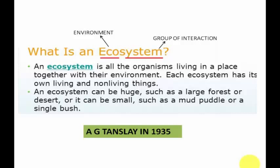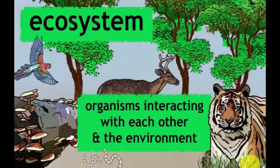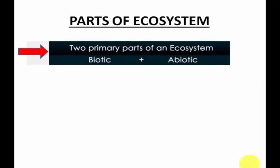Each ecosystem has its own living and non-living things. An ecosystem can be huge, such as a large forest, an ocean, or a desert, and it can be as small as a small pond, a mud puddle, or a single bush. This word 'ecosystem' was first given by A.G. Tansley in 1935. So, an ecosystem is an environment where both living and non-living organisms interact with each other.